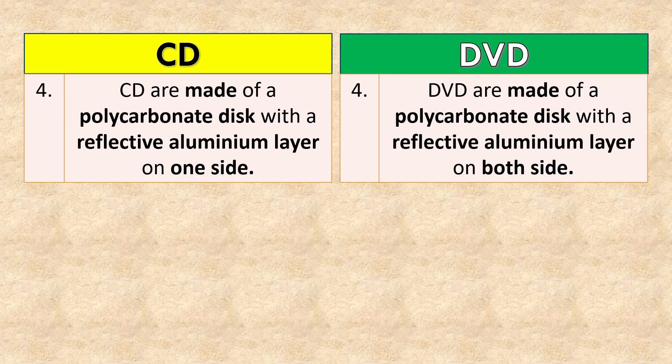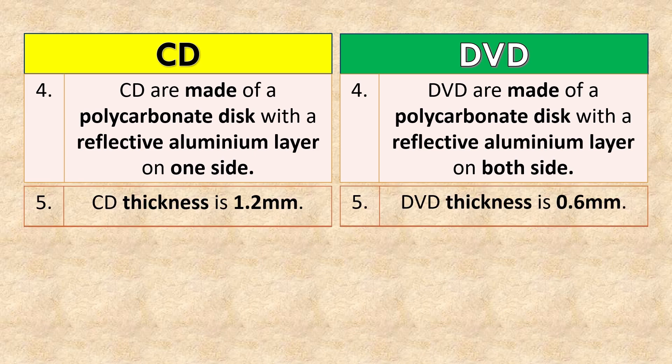CDs are made of a polycarbonate disc with a reflective aluminum layer on one side. DVDs are made of a polycarbonate disc with a reflective aluminum layer on both sides. CD thickness is 1.2 mm, while DVD thickness is 0.6 mm.